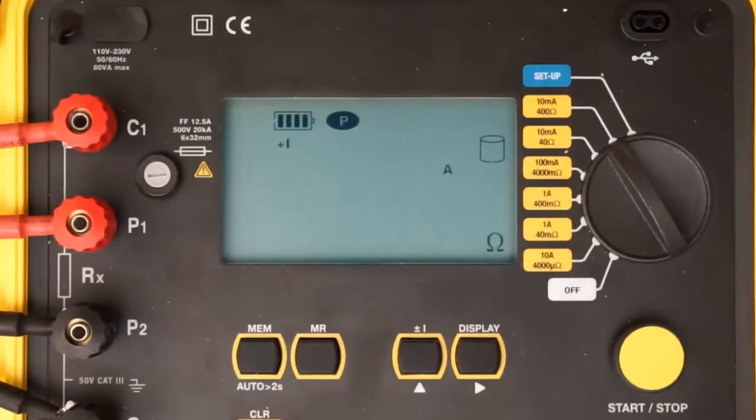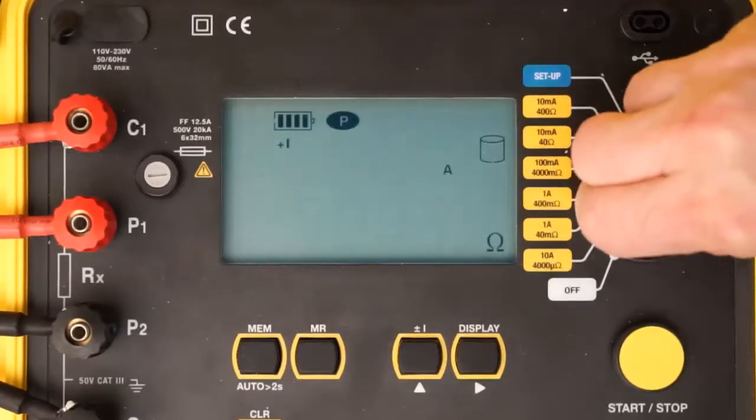When the configuration is set, you are ready to take a resistance measurement. If the resistance you are testing is unknown, we suggest starting with the instrument's highest resistance range and then lowering the range until you obtain meaningful results. In our demonstration, we are using a shunt of known resistance, so we will turn the dial to the 10 amp, 4000 micro-ohm setting.